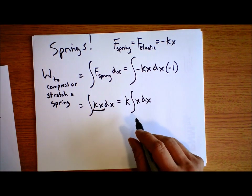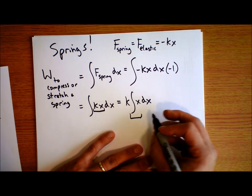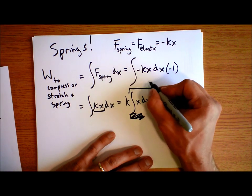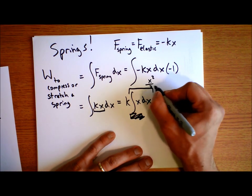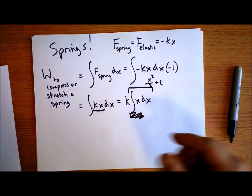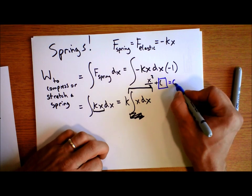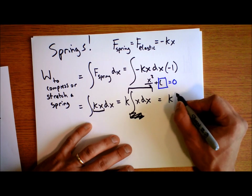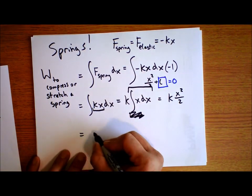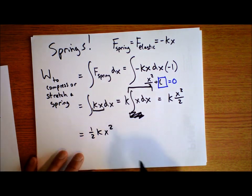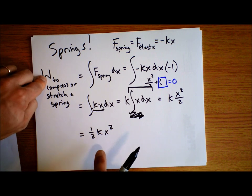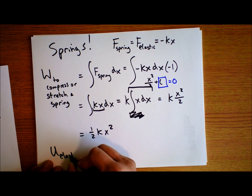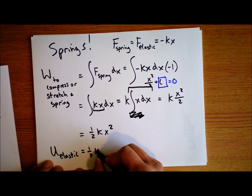The integral of x is x squared over 2 plus a constant, and that constant is zero. So we get k times x squared over 2, which written another way is one-half kx squared. The work done to compress or stretch a spring is one-half kx squared. This is also the elastic potential energy of a spring: one-half kx squared — and that's true if there's no internal friction.